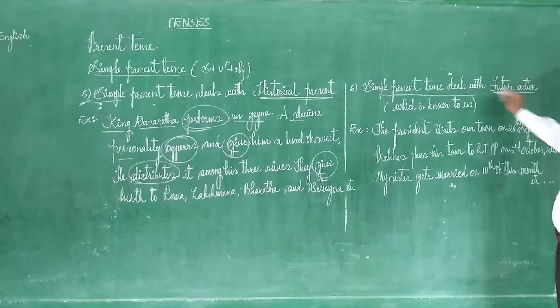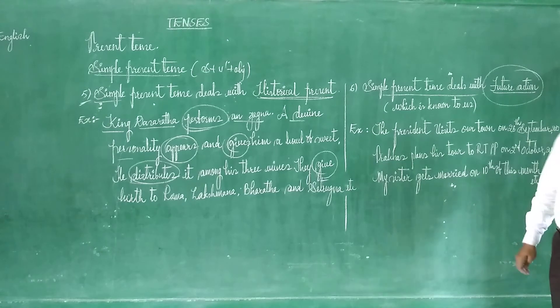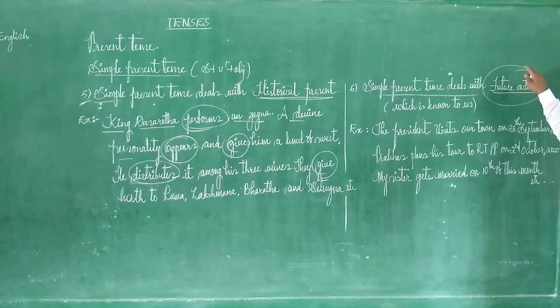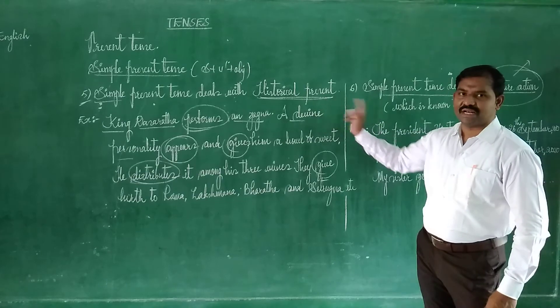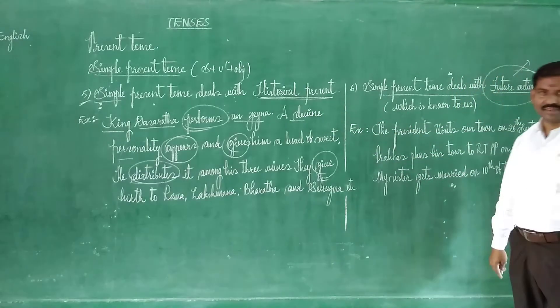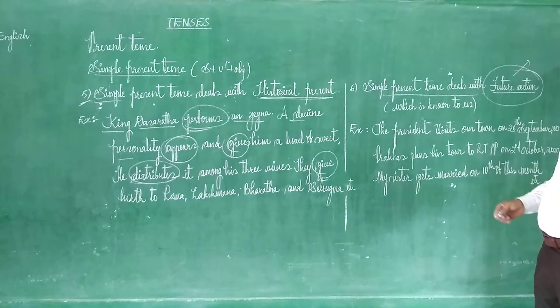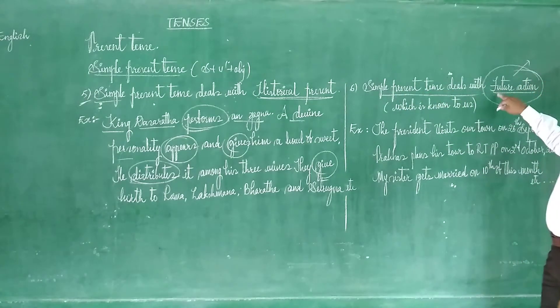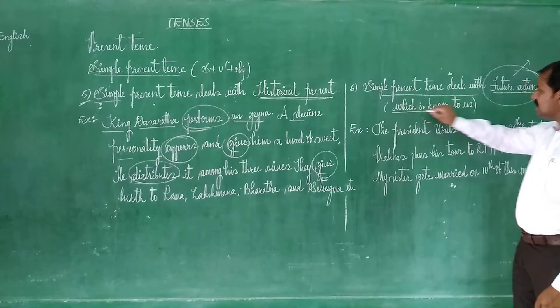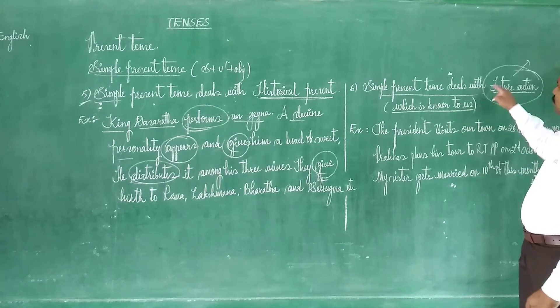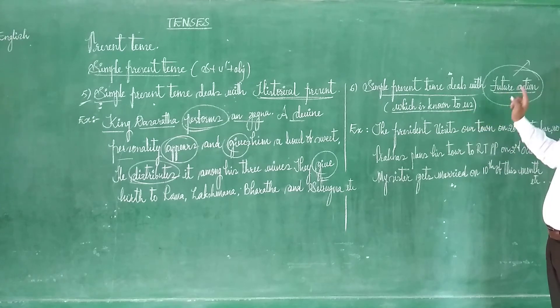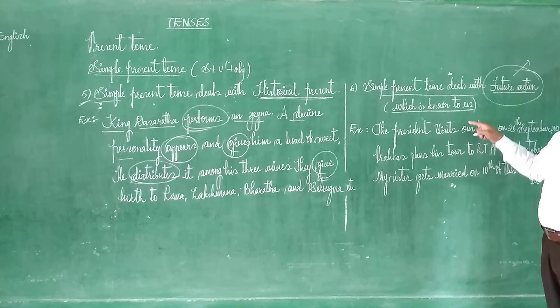Next one, simple present tense deals with the future action. We know very well what are future actions. Anything that is going to happen in the future, that comes under called future action. But generally this kind of thing we see in the future tense. However, we have a great provision using both of them in the simple present tense itself. Simple present tense deals with future action, but there is a clause here. That is when it is known to us. Before you know anything that is happening in the future, now.